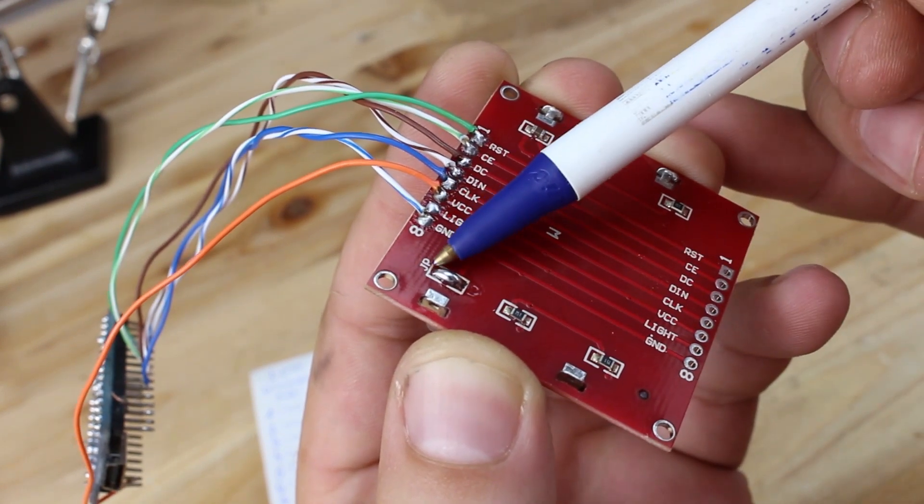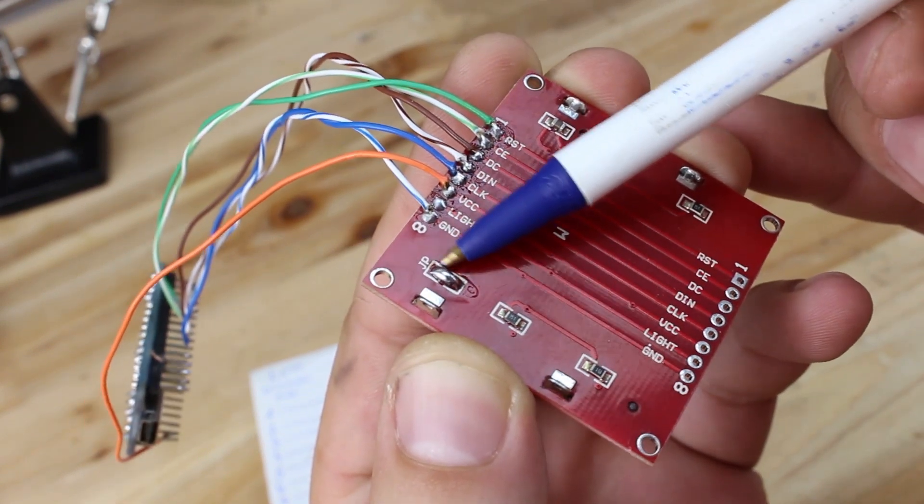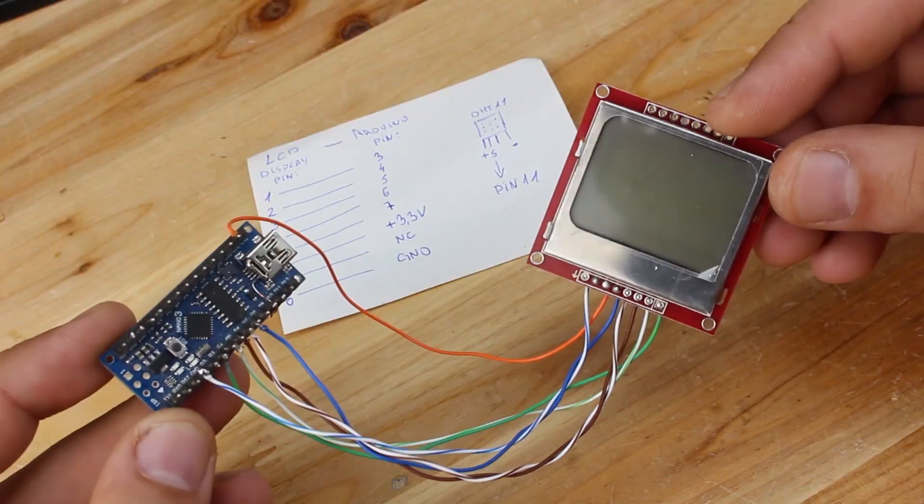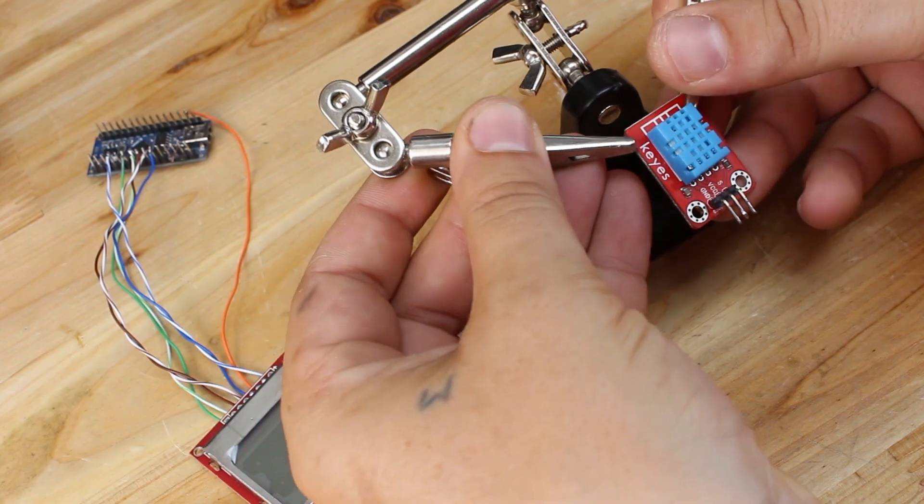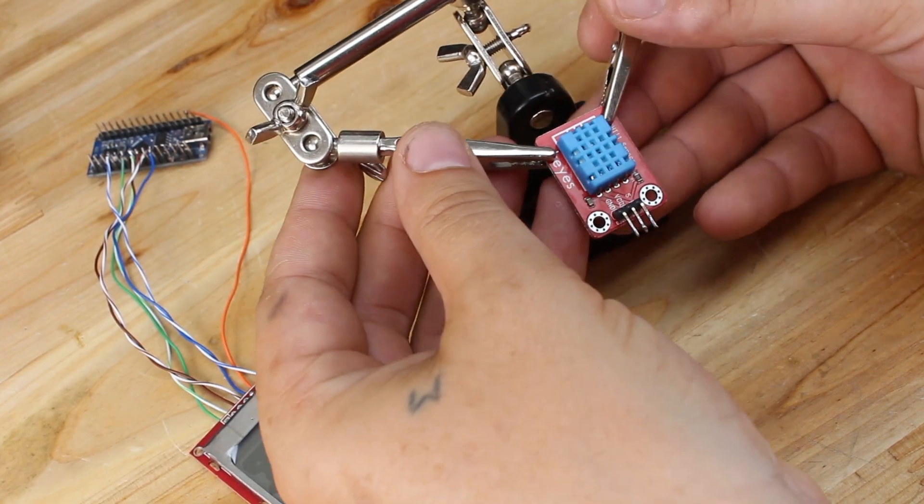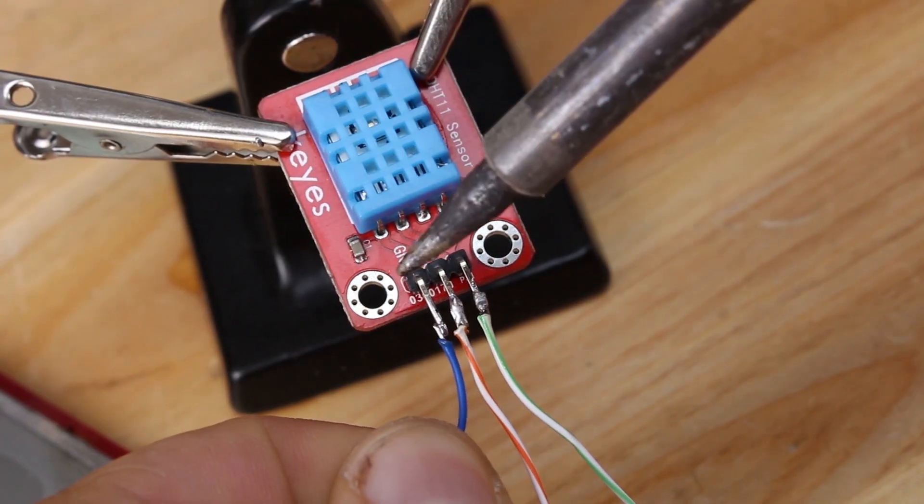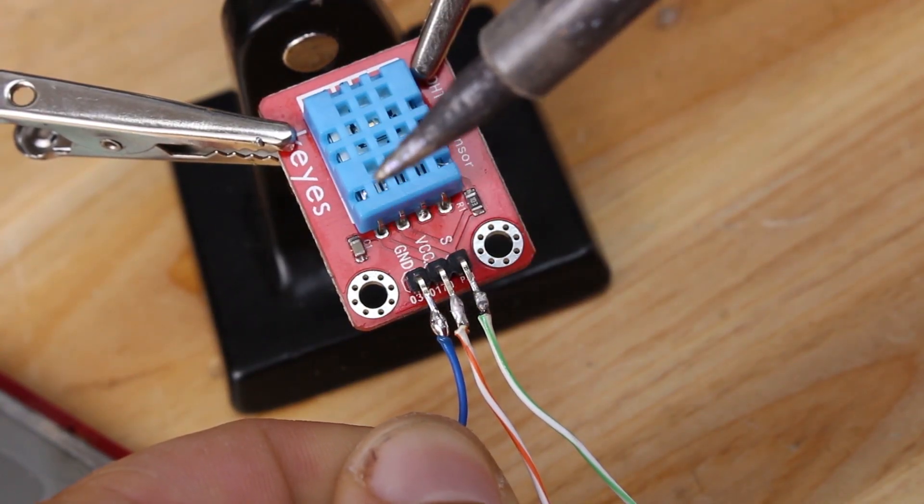After soldering all seven wires, don't forget to short circuit the jumper on LCD display. It's for LED backlight. Next is to solder wires to DHT11 sensor and connect to Arduino board to digital pin 11.